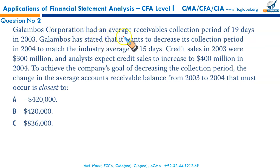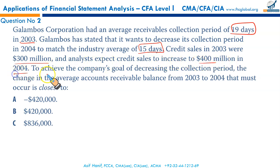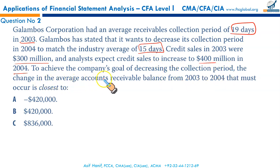Glam Boss Corporation had an average receivable collection period of 19 days in 2003. Glam Boss wants to decrease its collection period in 2004 to match the industry average of 15 days. Credit sales in 2003 were $300 million and analysts expect credit sales to increase to $400 million in 2004. To achieve the goal of decreasing the collection period from 19 to 15 days, we need to find the required change in the average accounts receivable balance.